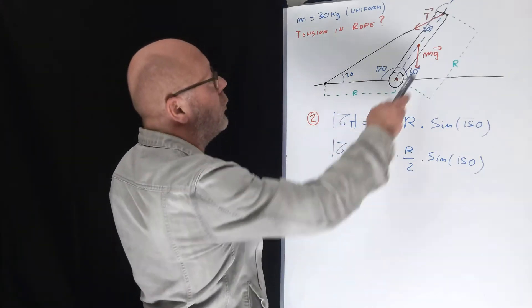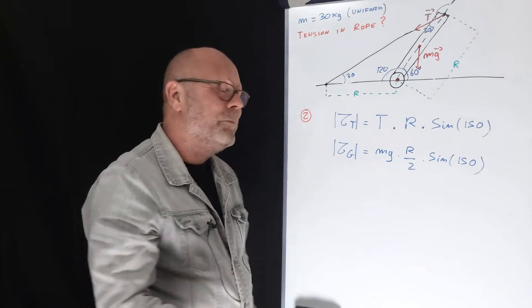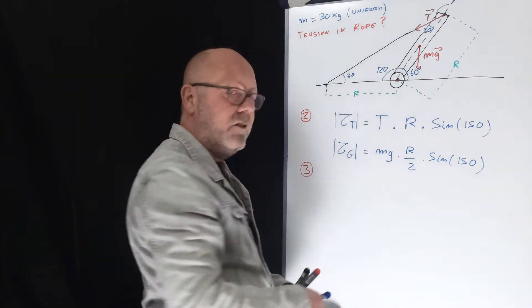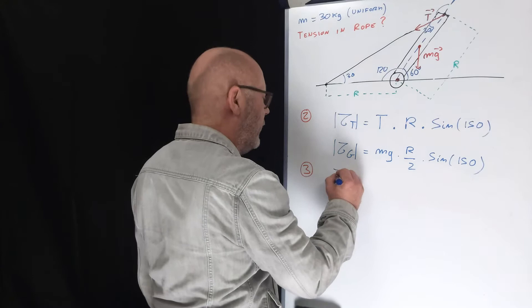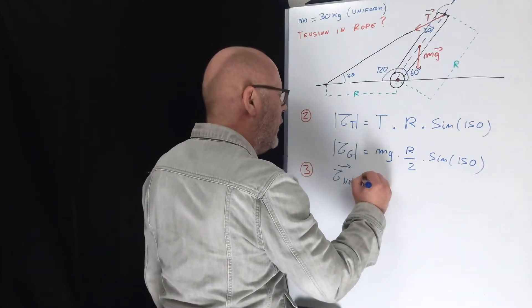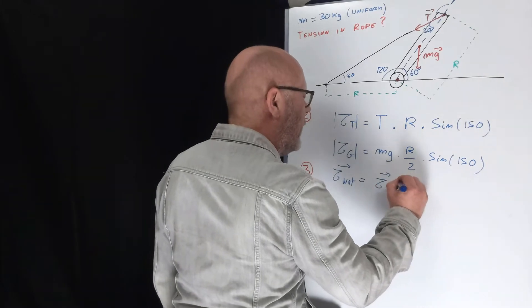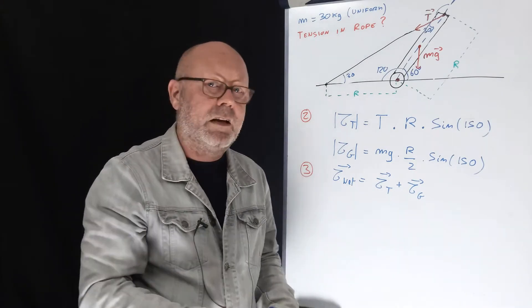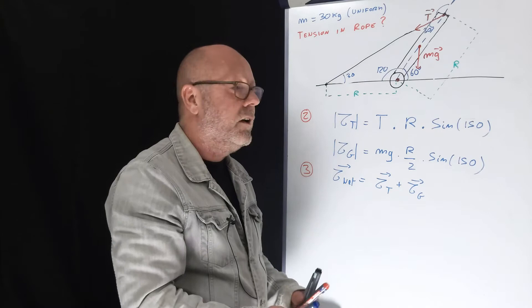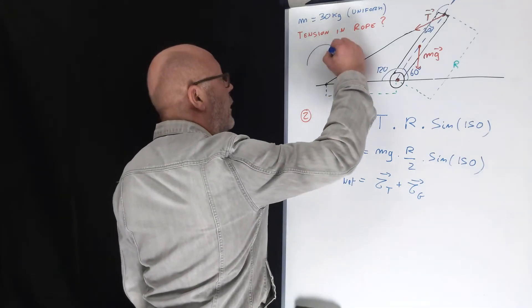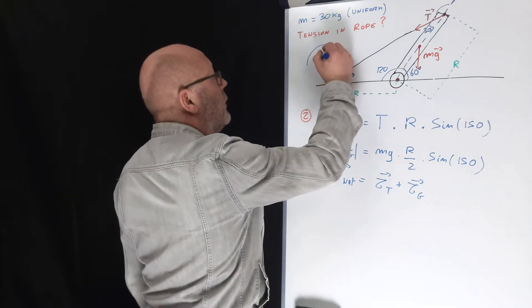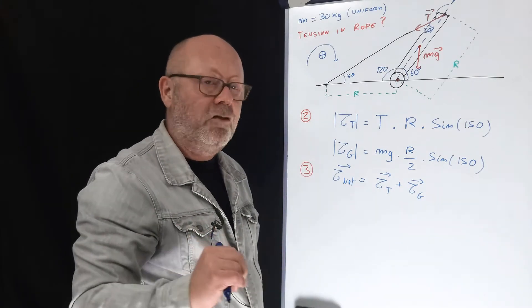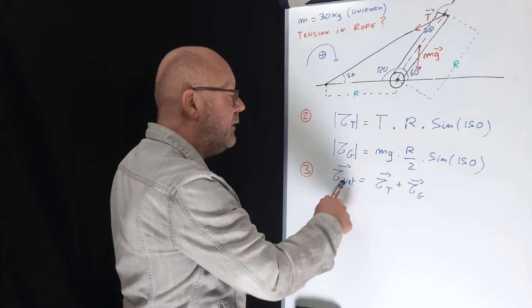So now we have the magnitude of all the torques which are applied on the plank. Step 3, find an expression of the net torque. The net torque is the vector sum of all the torques that are applied on the object of interest. We can write this mathematically: Tor net as a vector equals Tor tension as a vector plus Tor gravity as a vector. We will be adding vectors here, so we need to define an axis with a positive direction. Since these are rotational vectors, we need to define a rotational axis and a positive direction. Let's consider that something rotating clockwise would have a positive direction of rotation.